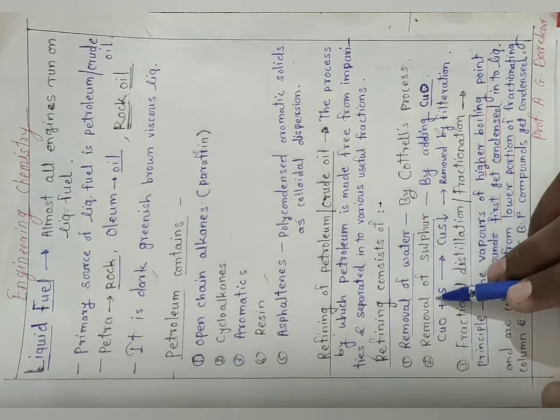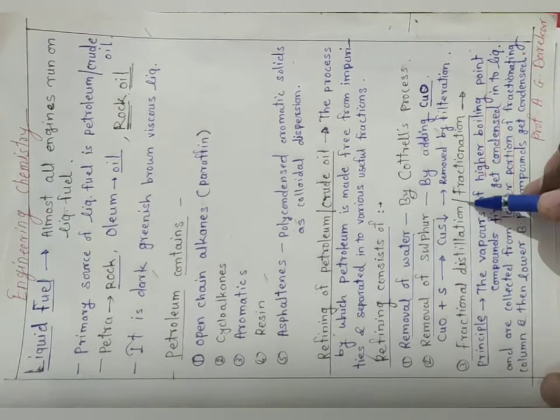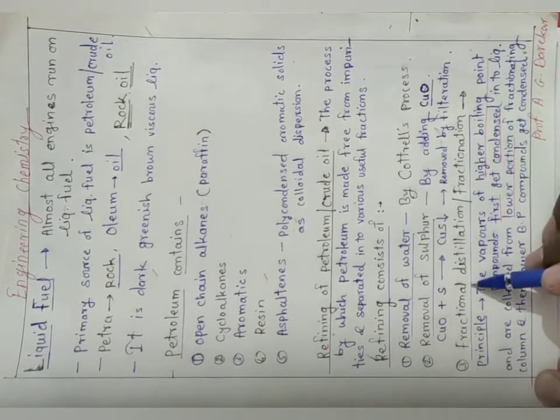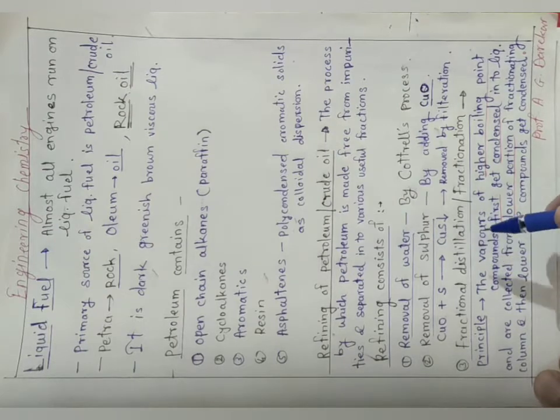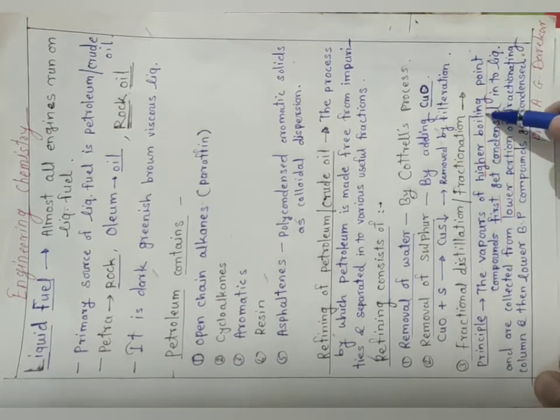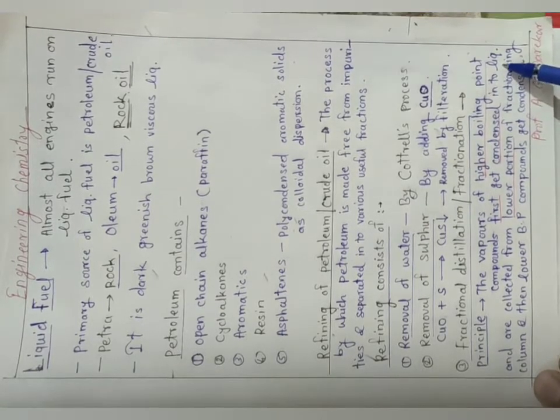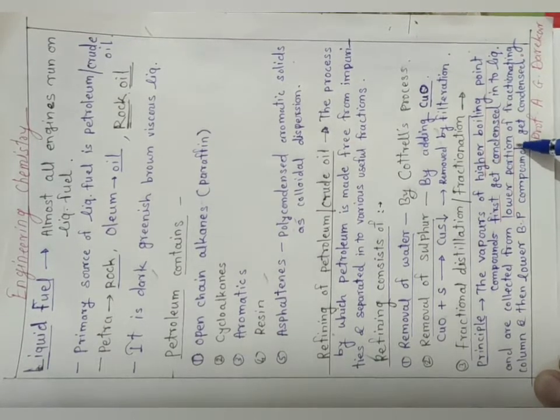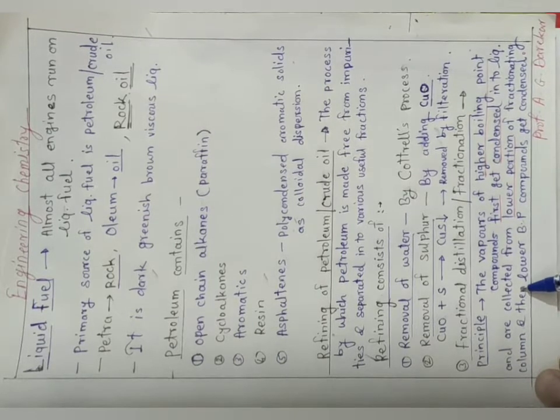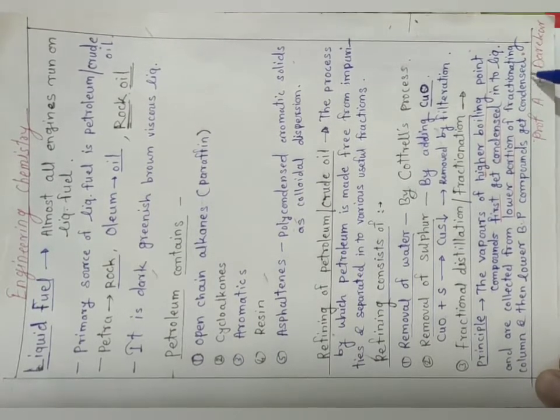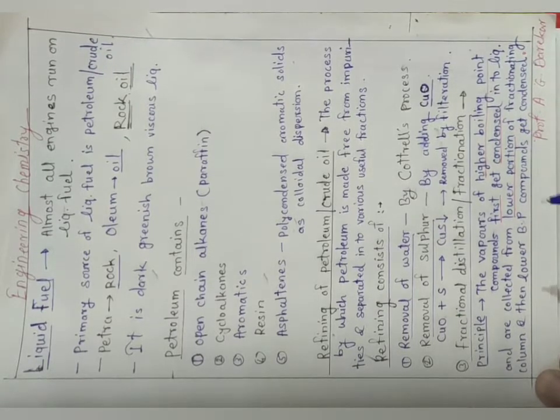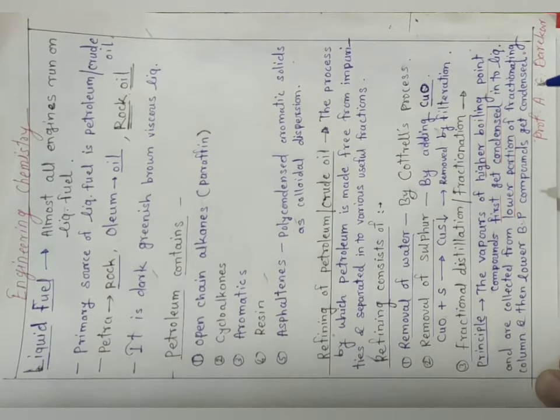Now after these two steps, we have to do the final step, that is fractional distillation, called fractionation. Now what is the principle behind fractional distillation? The vapors of higher boiling point compounds first get condensed into liquid and are collected from the lower portion of the fractionating column, and then lower boiling point compounds get condensed. Please try to understand: during fractional distillation, first who is getting condensed? The vapors whose boiling point is high get condensed first and we collect from lower portion, and then later on lower boiling point compounds get condensed.